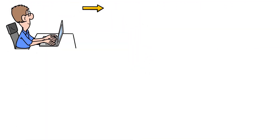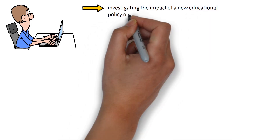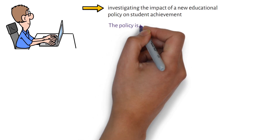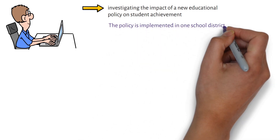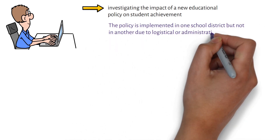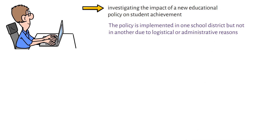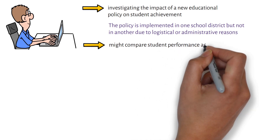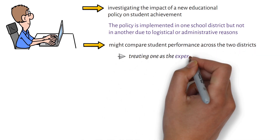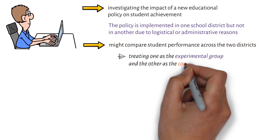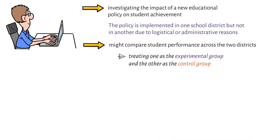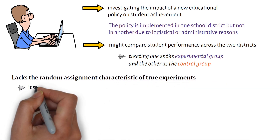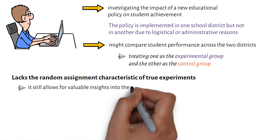Imagine a researcher investigating the impact of a new educational policy on student achievement. The policy is implemented in one school district but not in another due to logistical or administrative reasons. In this case, the researcher might compare student performance across the two districts, treating one as the experimental group and the other as the control group. While this approach lacks the random assignment characteristic of true experiments, it still allows for valuable insights into the policy's effects.